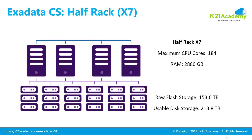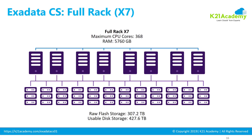Similarly, if you go with the half rack X7 model, you get four database nodes and six storage servers, which means you get up to 184 CPUs. RAM can go up to 2,880 GB, and the flash storage as well as usable disk space scale accordingly.